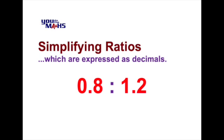So 0.8 and 1.2 can be turned into whole numbers because in both of these cases the numbers are expressed to one decimal place.